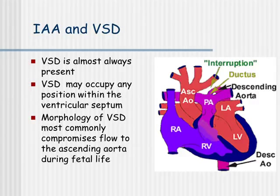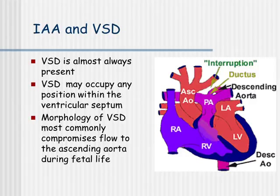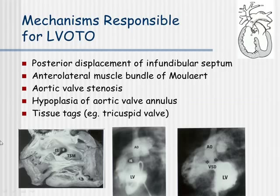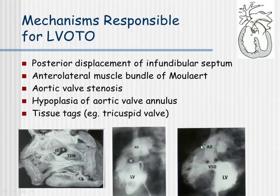VSD is almost always present, and it may occupy any position within the ventricular septum: subaortic, perimembranous, muscular, or doubly committed. Morphology of the VSD most commonly compromises flow to the ascending aorta during fetal life. The mechanisms responsible for left ventricular outflow tract obstruction include most often posterior displacement of the infundibular septum, as seen here. These pictures are from the book by Bob Freedom and Lee Benson, my mentors in Toronto. Here's the malalignment of the infundibular septum shown in angiographies, and there's a ventricular infundibular fold on the other side causing additional obstruction to the flow to the aorta.